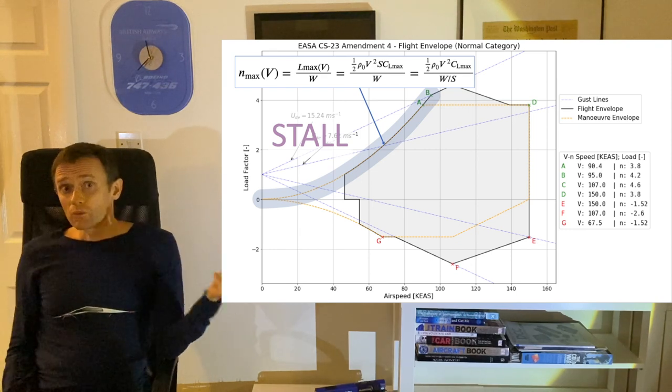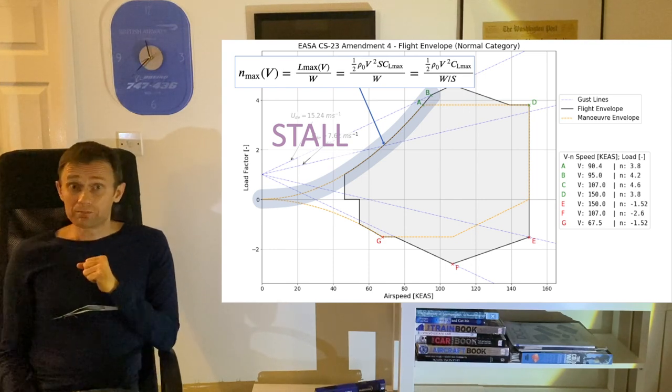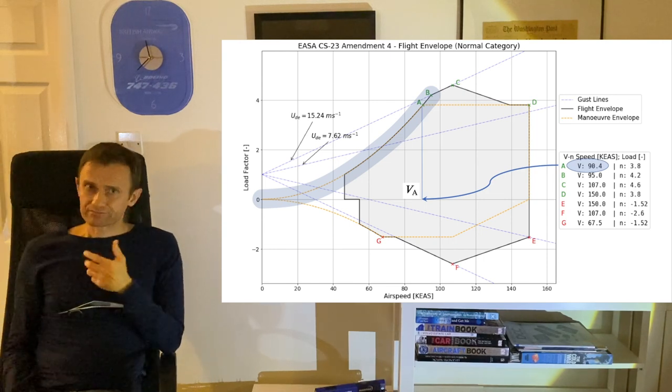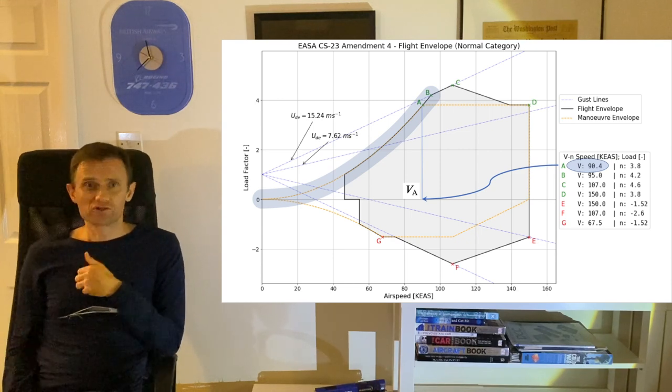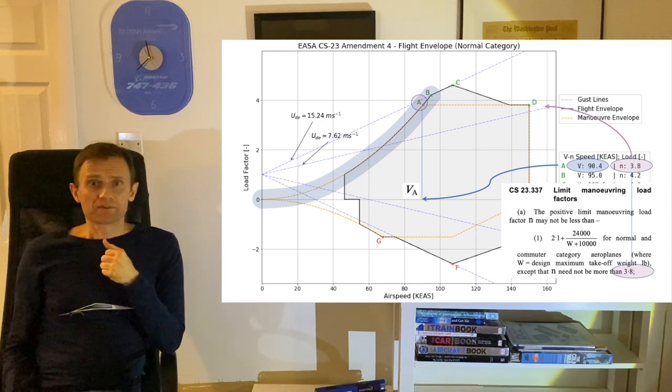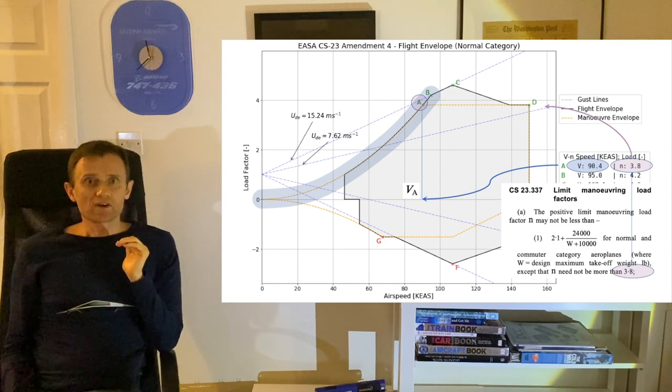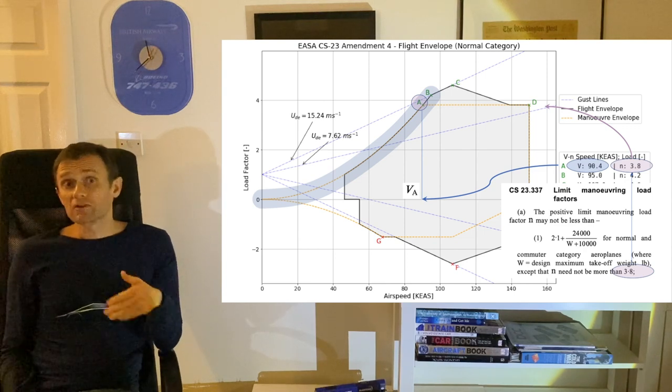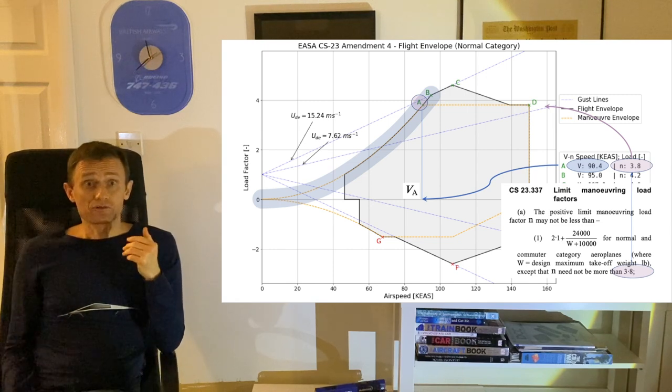Now with increasing equivalent airspeed, the maximum achievable load factor increases, but at the value denoted VA, or maneuver speed, it reaches the limit load factor permitted by the certification requirements. For example, CS 23.337 paragraph 3.8 in this case. In other words, once you have exceeded the maneuver speed, a full deflection of the control surfaces, if they have sufficient authority, may cause the airframe to exceed the limit load factor.